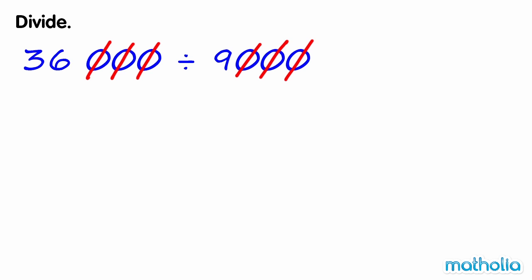36,000 divide 9,000 is equal to 36 divide 9. 36 divide 9 equals 4. So 36,000 divide 9,000 also equals 4.